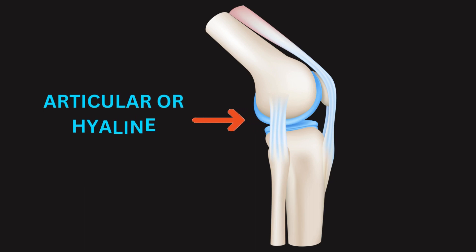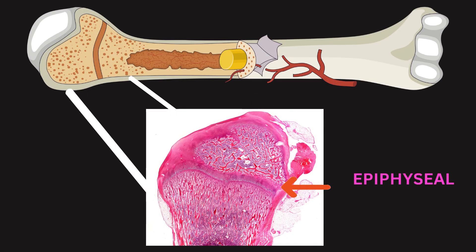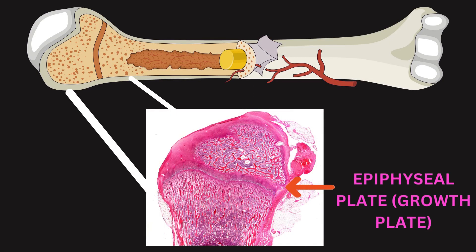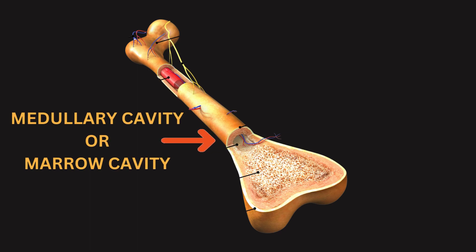4. Articular cartilage: a thin layer of hyaline cartilage covering the joint surfaces of bones. 5. Epiphyseal plate (growth plate): a cartilaginous structure in the metaphysis that allows for longitudinal bone growth during childhood. 6. Medullary cavity, or marrow cavity: the hollow space within the diaphysis that contains bone marrow.